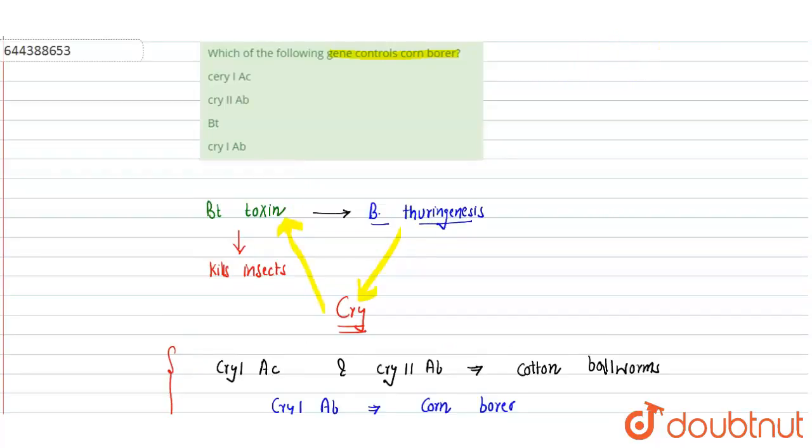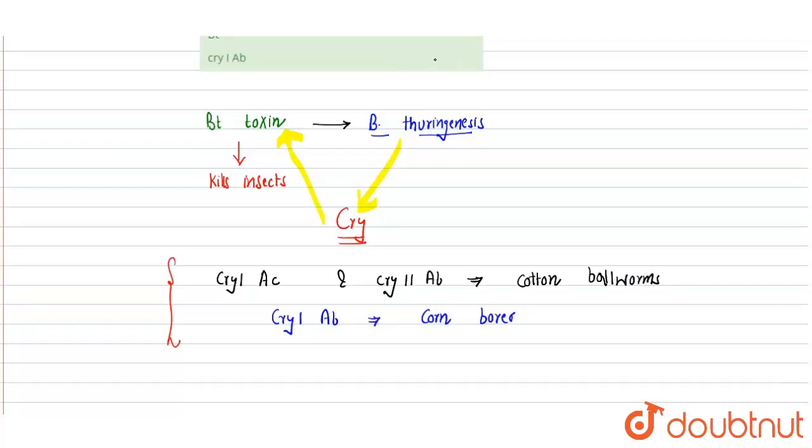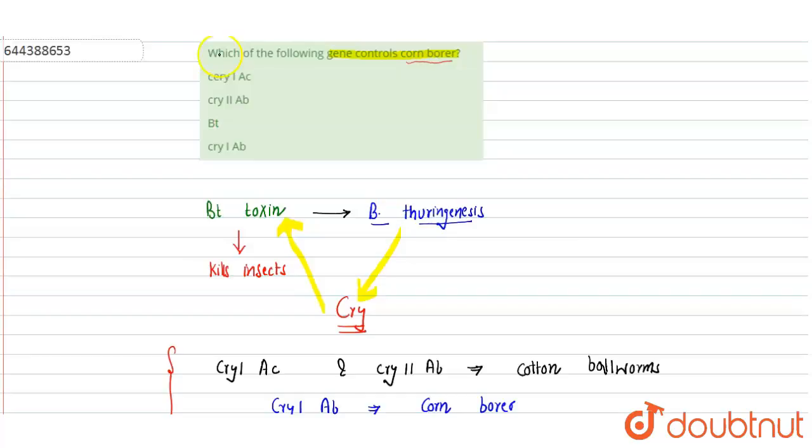Now let's see the statement. The statement says which of the following genes control corn borer, so they have specifically asked about the corn borer. That is cry1ab. Here, cry1ac is wrong. cry1ac is for the cotton bollworm, so we can say that's an incorrect option.